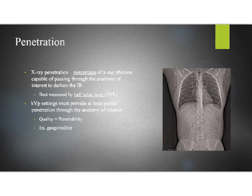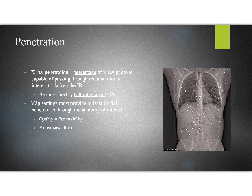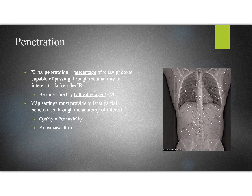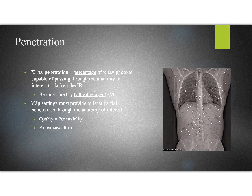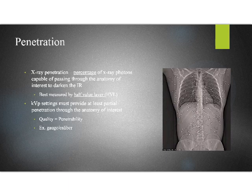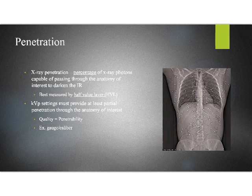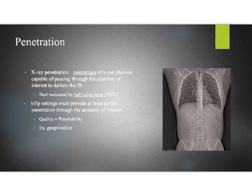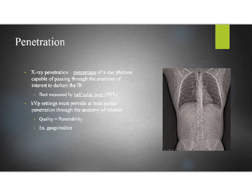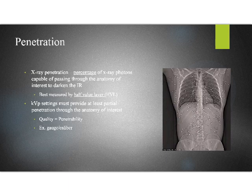So the same thing happens with the x-ray. If we think about KVP controlling the penetrability of the x-ray beam, what it's doing is controlling the percentage of x-ray photons that are capable of passing through the patient's body and darkening the image receptor. It's controlling the power that we're placing inside the x-ray photons to pass through matter. So if this man had been shot with a more high-powered shotgun, more of this buckshot would have passed through his body. Same as what's happening when we control KVP in the x-ray circuit. The best measure of this penetrability power is half value layer.